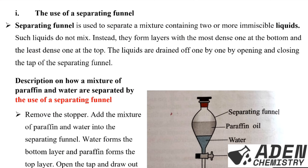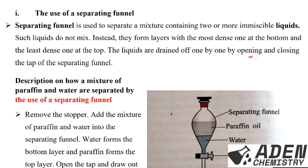Let's go to the first method of separating immiscible liquid-liquid mixtures — the use of a separating funnel. A separating funnel is used to separate a mixture containing two or more immiscible liquids. Such liquids do not mix; instead they form distinct layers, with the most dense one at the bottom and the least dense one at the top. The liquids are drained off one by one by opening and closing the tap of the separating funnel.